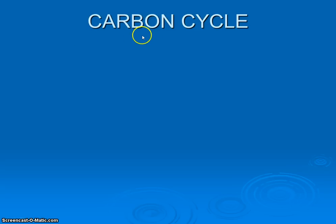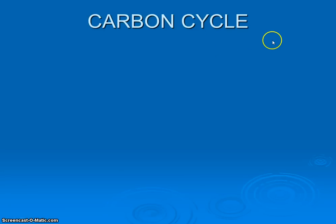Another big one, and really there are three cycles total. This one you're already familiar with from video two, and it's also a question in our food web activity: the carbon cycle. We know that carbon is the basis for all of our organic molecules — it makes up carbohydrates, lipids, proteins, and amino acids. Carbon is a big one.